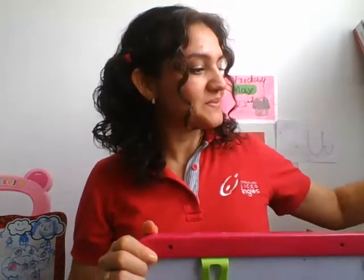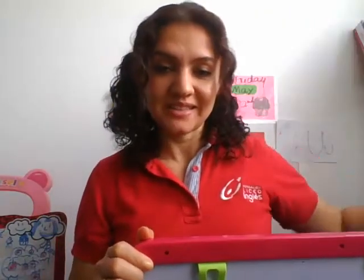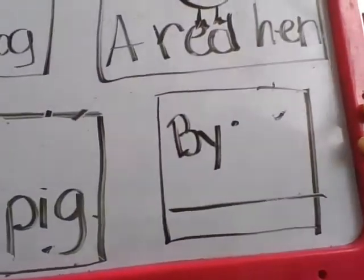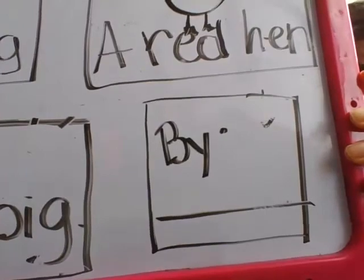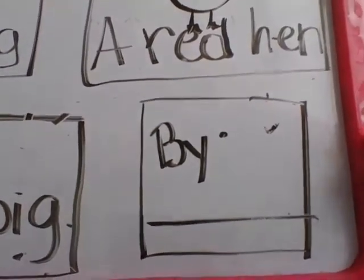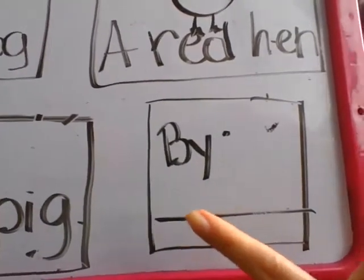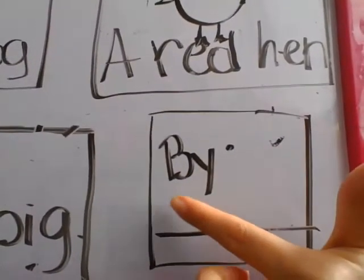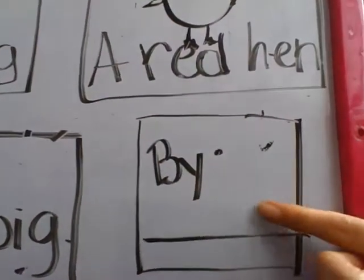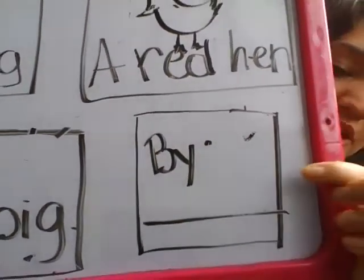Now let's go with a new one, and that is about the author — it means you. You're going to talk about yourself as the writer and illustrator of this story. It will have 'by,' then you write your name: by Diana, by Cata, by Jose, by Esteban.